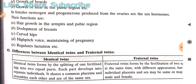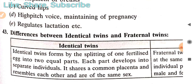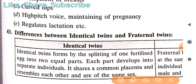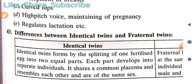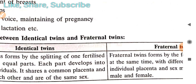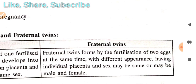Previous exam questions sometimes ask the difference between identical twins and fraternal twins. Identical twins are formed by the splitting of one fertilized egg into two equal parts. Each part develops into a separate individual. They share a common placenta, resemble each other closely, and are always of the same sex.